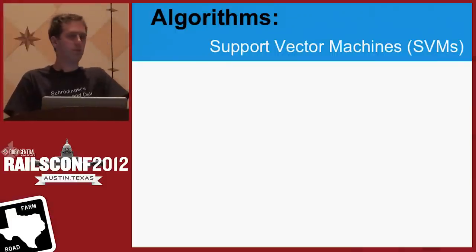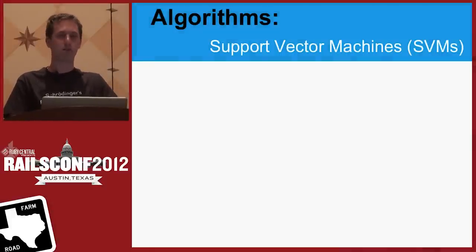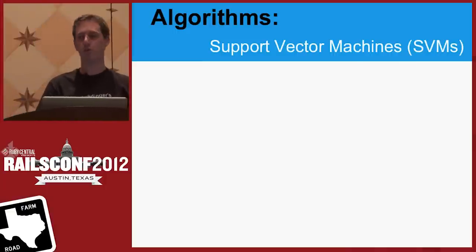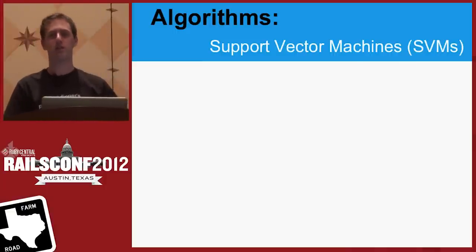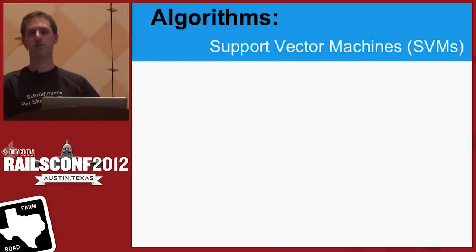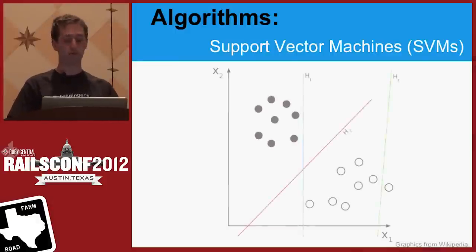Another algorithm is support vector machines. Support vector machines are a modern algorithm — they're good for basically any classification that has fewer than about 2,000 features. When you classify documents, you often treat every word as a feature, and in that case support vector machines don't always work that well — they can use a lot of memory and be slow. But for anything smaller, they work very well.